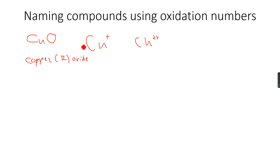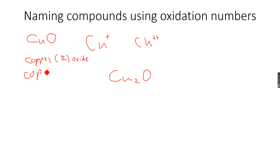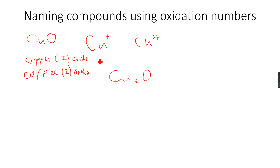If we have Cu₂O, where we are using Cu⁺ instead of Cu²⁺, the name of this compound becomes copper(I) oxide, because the oxidation state of copper in this case is plus 1.